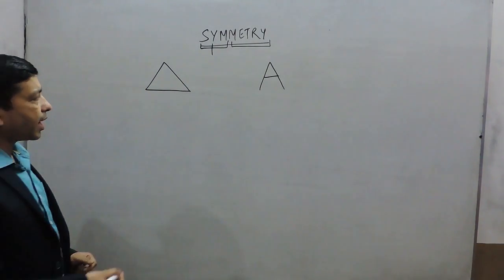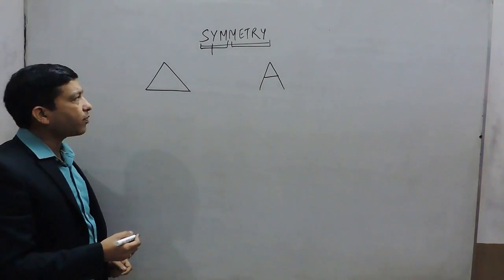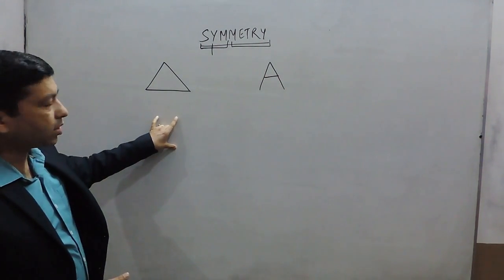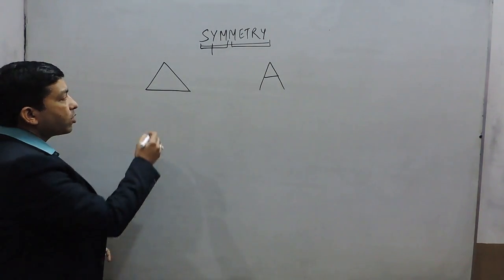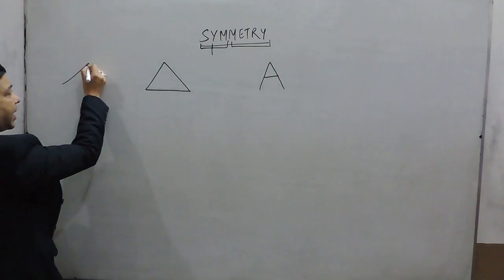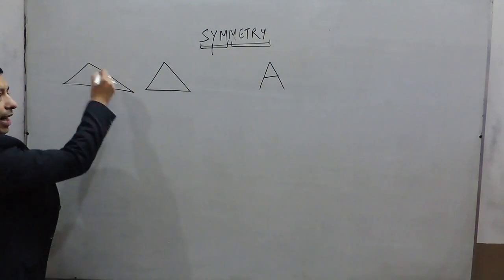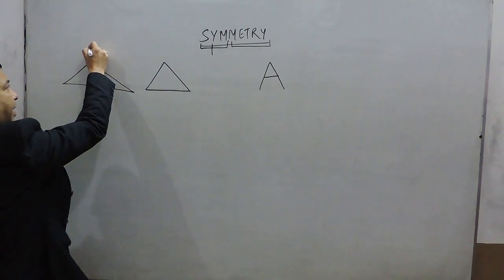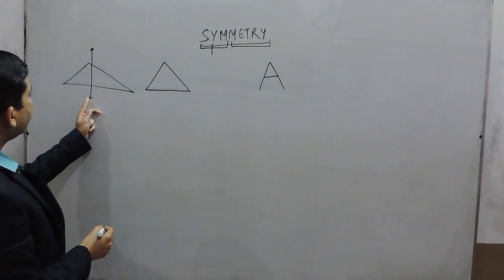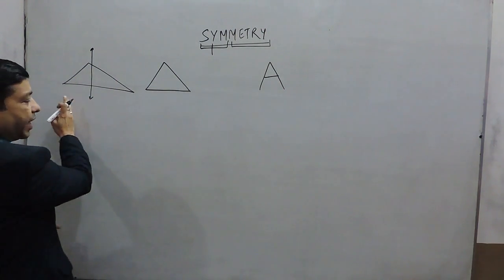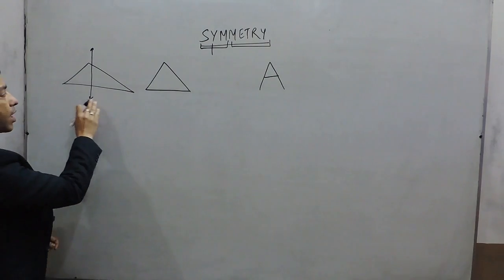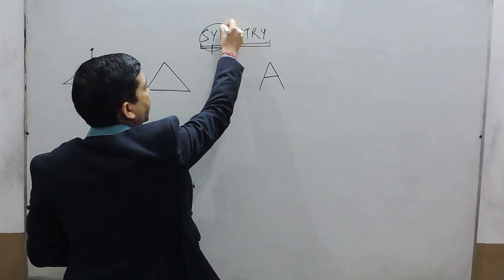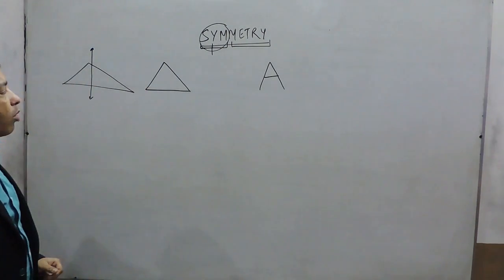If we talk about a triangle, there can be various kinds as we have already studied. It can be a scalene triangle, an isosceles triangle, and an equilateral triangle. If I talk about a scalene triangle where all three sides are different and I want to mark a line in between, this line will divide the triangle into two parts but they do not have the same measurements. When we talk about symmetry, that means the same measurements on both sides.